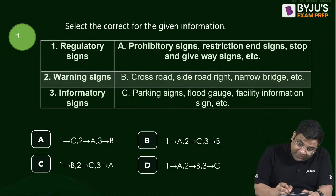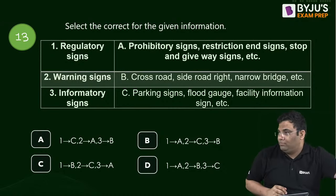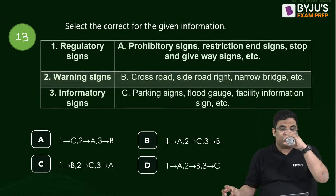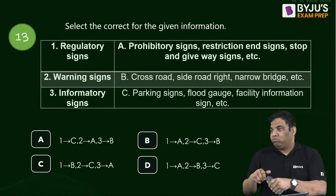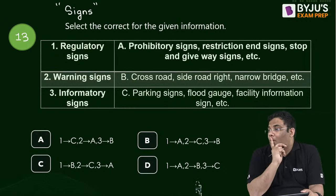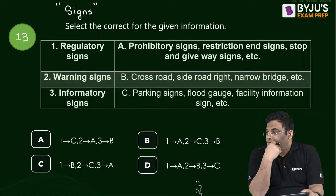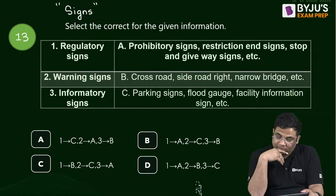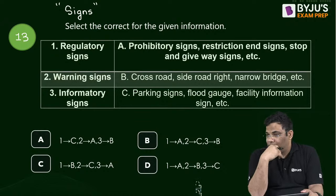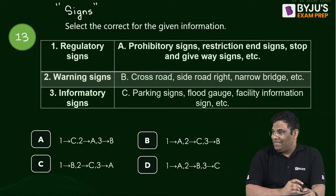Question 13: Theoretical question on traffic signs. Students are answering D. The answer involves identifying the correct category of a sign.